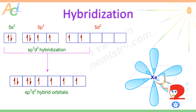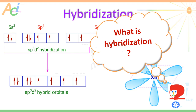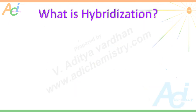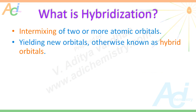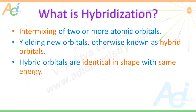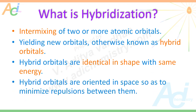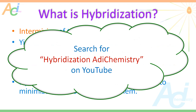Mr. Weiss asks: what is hybridization? Here is a brief summary. It is the intermixing of two or more atomic orbitals yielding new orbitals, otherwise known as hybrid orbitals. The hybrid orbitals are identical in shape with the same energy — that is why they are referred to as degenerate. Hybrid orbitals are oriented in space so as to minimize repulsions between them.